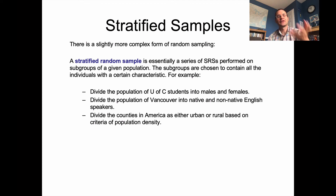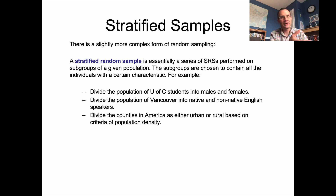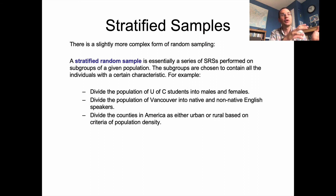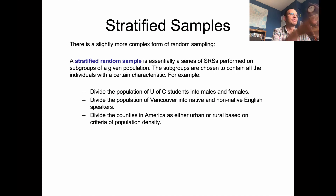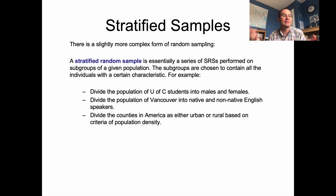The first example would be to divide the population of University of Calgary students into males and females — say if you wanted to study differences in their heights or some other characteristic. You've got a group of all the males at the U of C and all the females at the U of C, those form subpopulations. Then you sample at random from those two groups independently: throw all the male names into a hat, grab a few at random for your sample; throw all the female names into a hat and sample at random from those. That's your male and female sample.